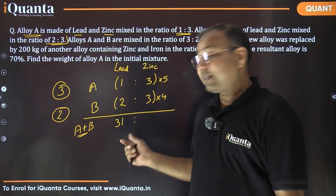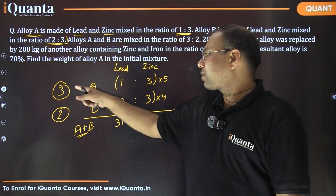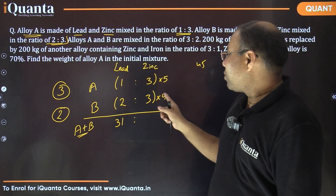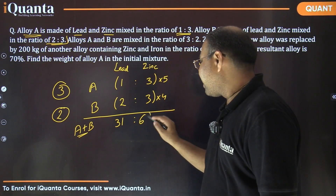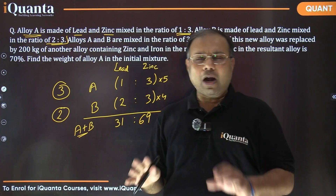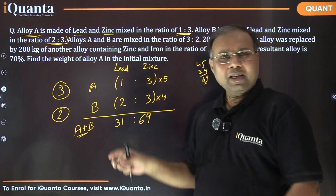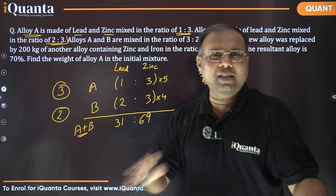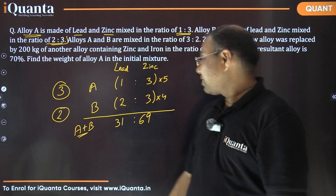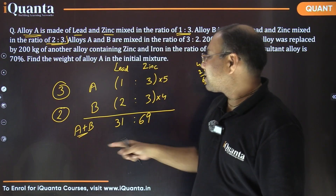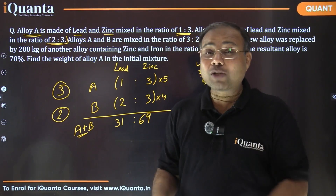Let's calculate the zinc. In alloy A, fifteen units of zinc per part times three parts equals forty-five. In alloy B, twelve units of zinc per part times two parts equals twenty-four. So forty-five plus twenty-four equals sixty-nine units of zinc. That confirms our total is one hundred units, with lead to zinc ratio of 31:69 in the combined mixture of alloys A and B.